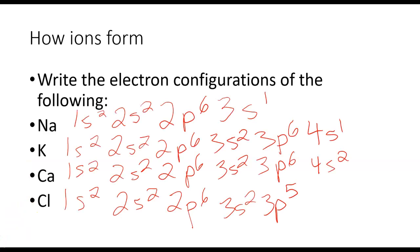If we look at the electron configurations in each of these, we can identify our valence electrons. This should be review. So we have the 3s1 here, 4s1, 4s2 here, 3s2, and 3p5.